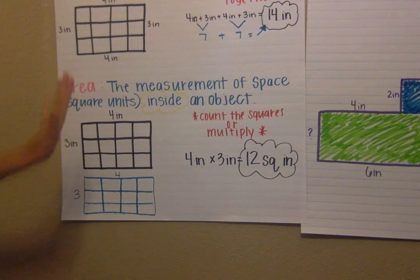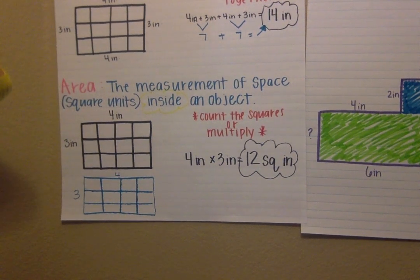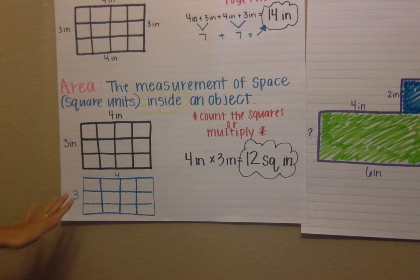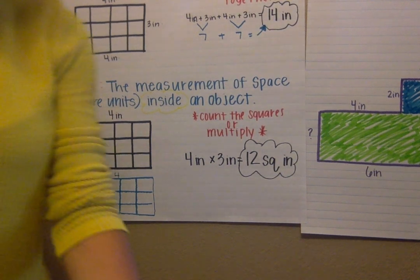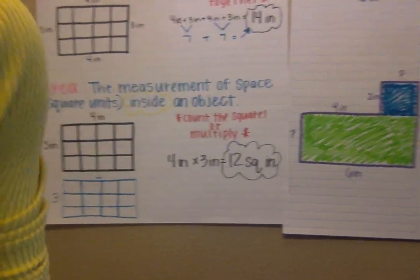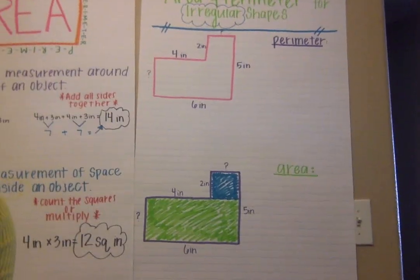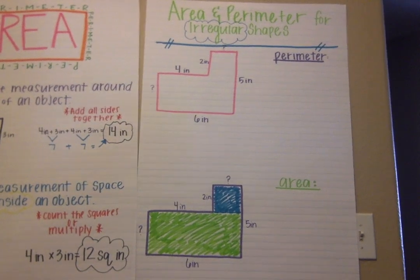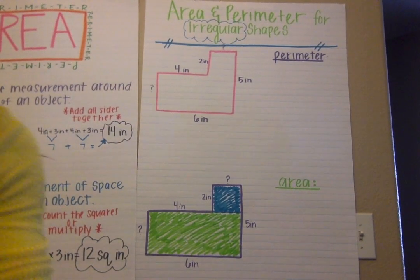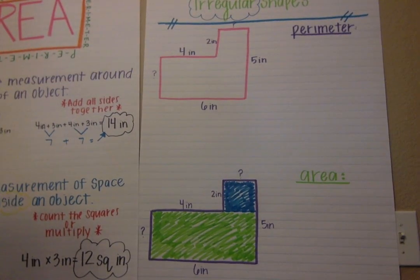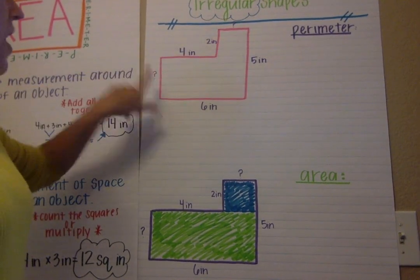Alright so that is area and perimeter for regular shapes. This should all be a review for you guys. We are gonna move over to irregular figures that look like this. For these we need to make sure that we are labeling each side even when they are not labeled.